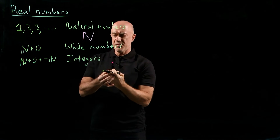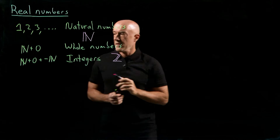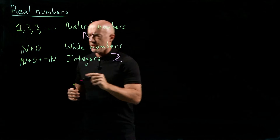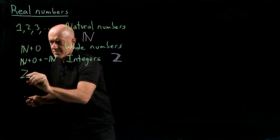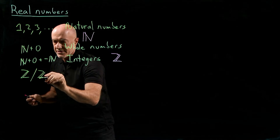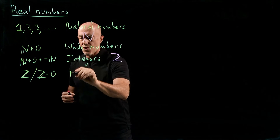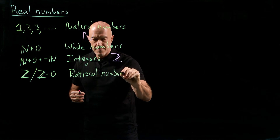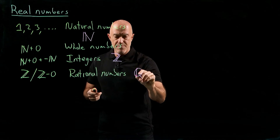The integers have a special symbol, which is blackboard Z. If we take the integers and then allow division by other integers — excluding 0, because we're not allowed to divide by 0 — we get what's called the rational numbers. And that has a special symbol, which is called blackboard Q.